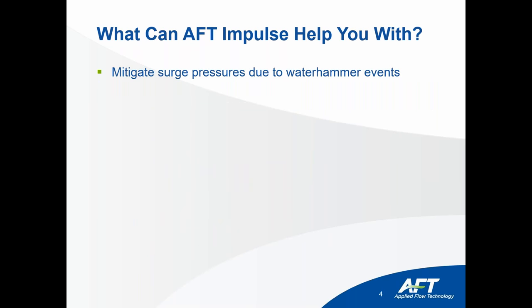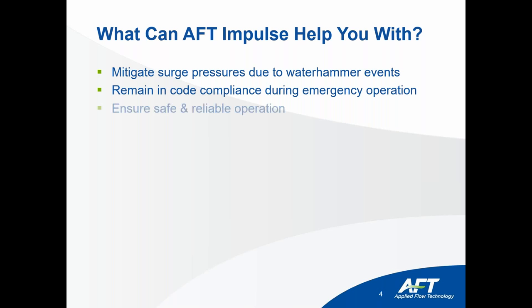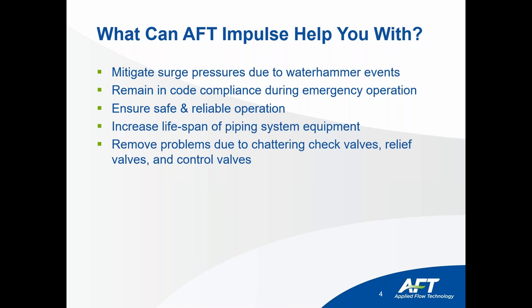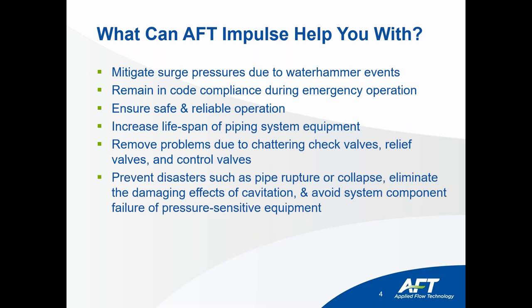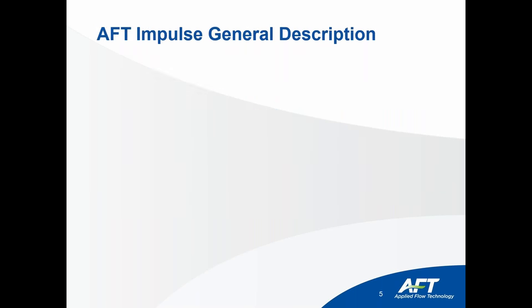You want to make sure that the pressure surges your system experiences do not cause a problem. AFT Impulse will help you identify where the maximum surge pressures will happen and give you guidance on how to implement various surge suppression measures to mitigate those issues. It can also help you maintain code compliance, ensure a safer and reliable system, increase the lifespan of your piping system equipment, remove chattering check valves, relief valves, or control valves, and identify if you've got cavitation happening and what the pressure spikes will be if you have a cavitation collapse.